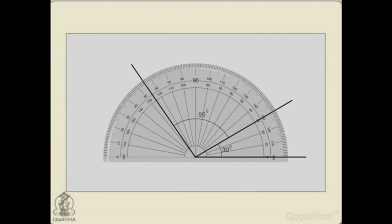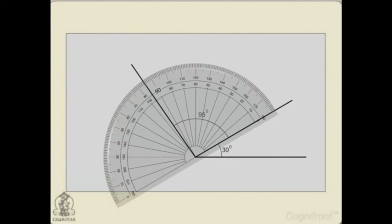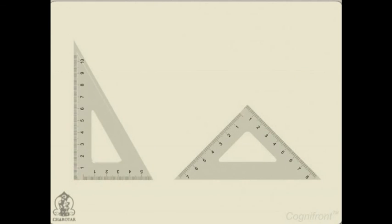Protractor is used to measure and lay out angles. Another tool is set squares, also known as triangles. They come in flavors of 30-60-90 degrees and 45-45-90 degrees.